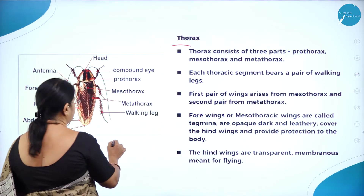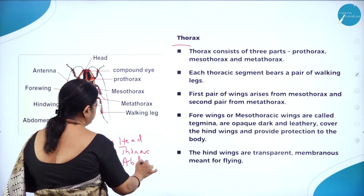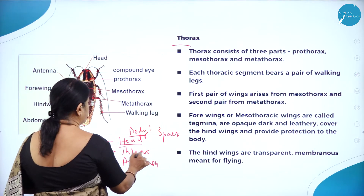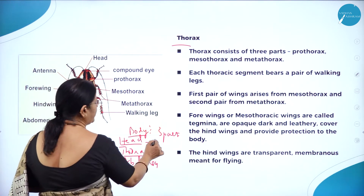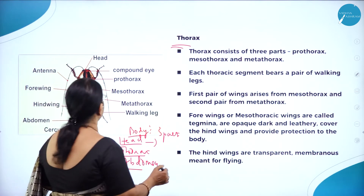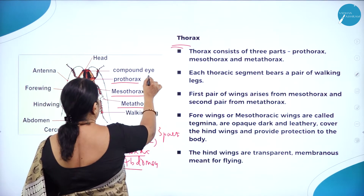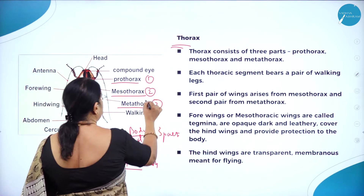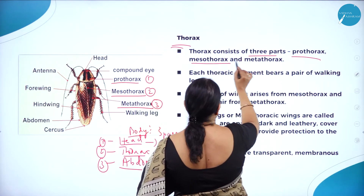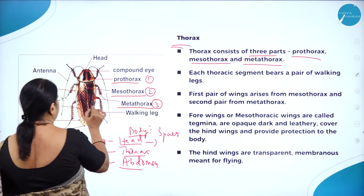The whole body is divided into head, thoracic region, and abdomen. Moving on to the thorax: the thorax consists of three parts — prothorax, mesothorax, and metathorax. Each thoracic segment bears a pair of walking legs. Here you can see the walking legs.